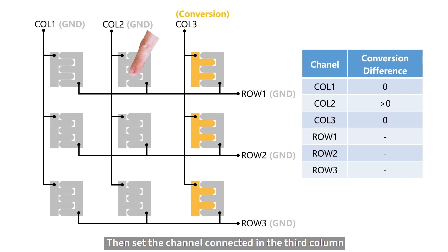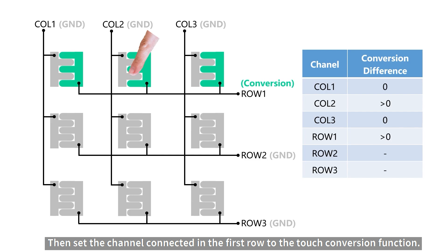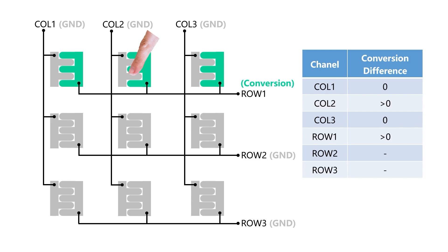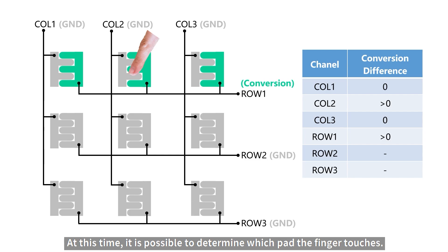Then, set the channel connected in the third column to the touch conversion function. The occurred touch conversion difference is 0. Then, set the channel connected in the first row to the touch conversion function. The occurred touch conversion difference is greater than 0. At this time, it is possible to determine which pad the finger touched. However, we will continue to scan the matrix and finally process all the results.